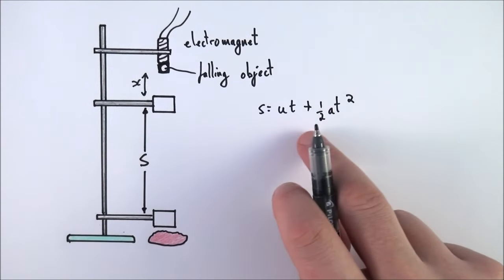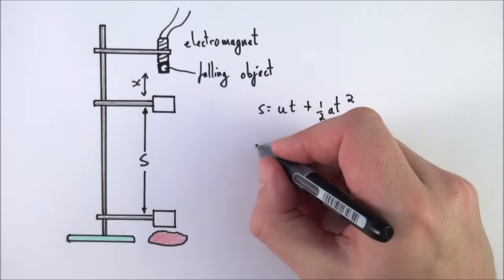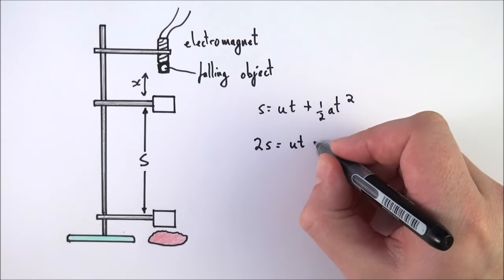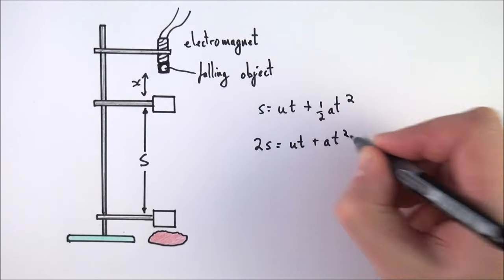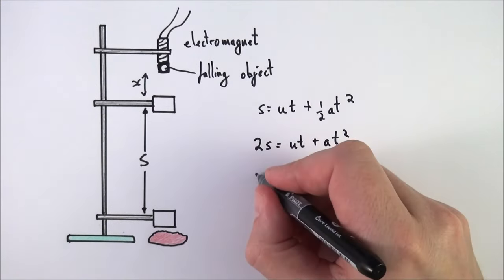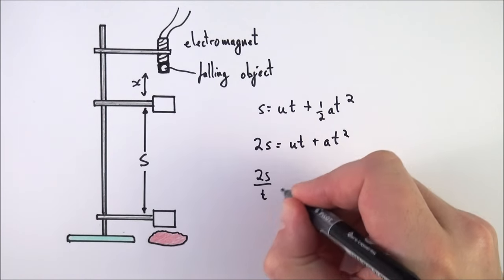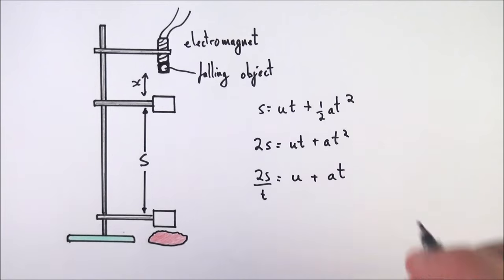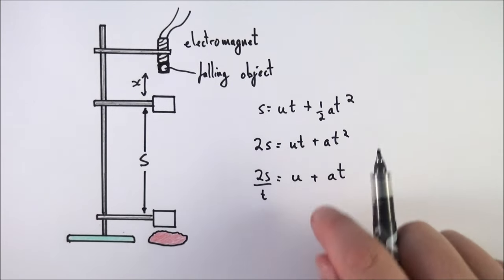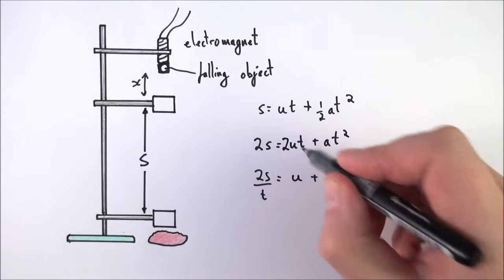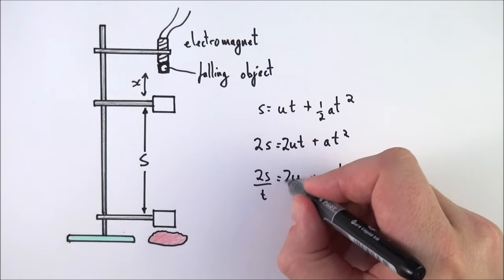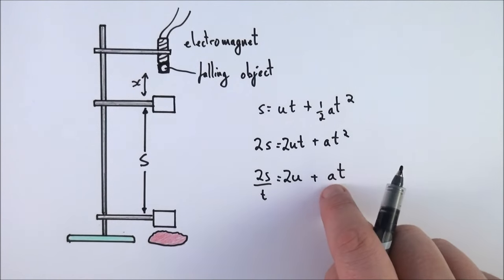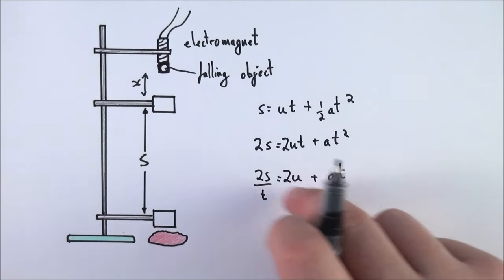So what we can do is basically rearrange. If I multiply both sides by two, we can say that 2s is equal to 2ut plus at squared. Then if I divide both sides by t, I can say that 2s divided by t is equal to 2u plus at. The key thing here is we can then use this along with information that we get from here to plot a graph.